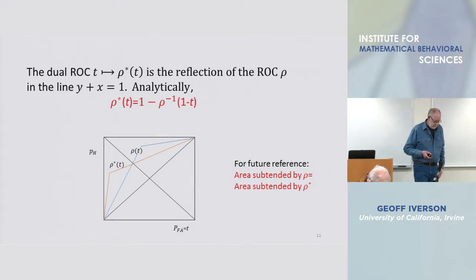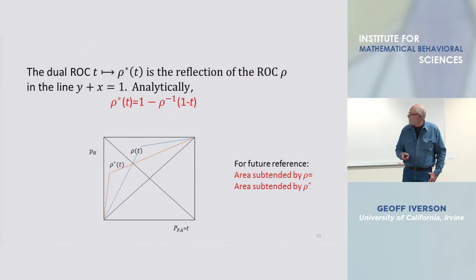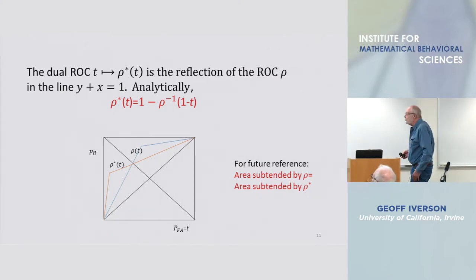Here is the geometry that relates the ROC rho in blue to the dual rho star. Rho star, given an ROC rho, you generate rho star by reflection about the off diagonal.